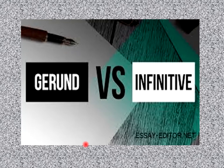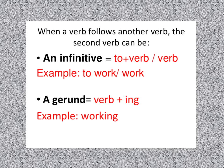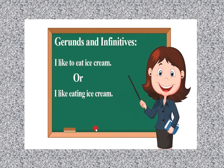Now let's look at gerund versus infinitives and discuss the difference between them. When a verb follows another verb, the second verb can be an infinitive, which equals 'to + verb' — for example, 'to work.' A gerund is 'verb + ing' — like 'working.' For example: 'I like to eat ice cream' — that is an infinitive because we used 'to' with the verb.